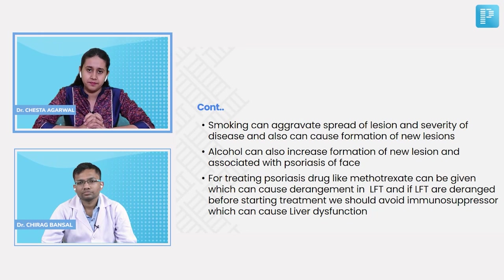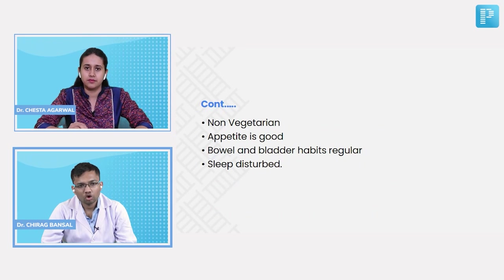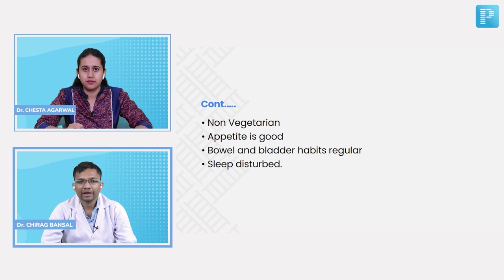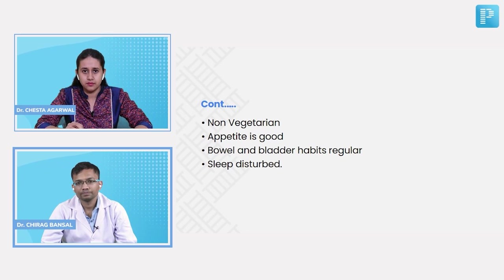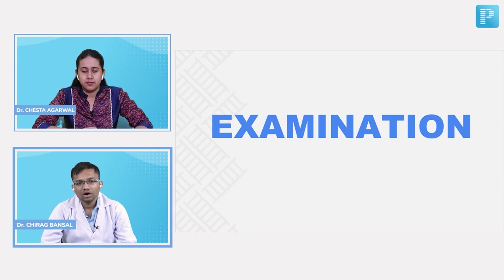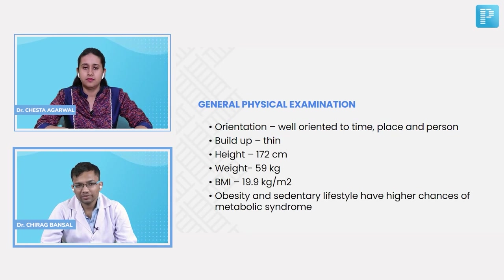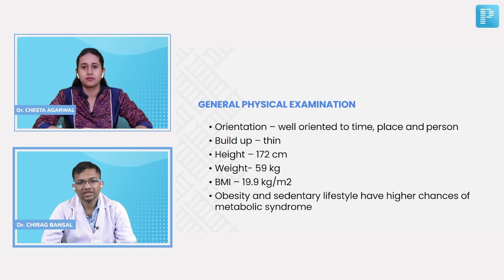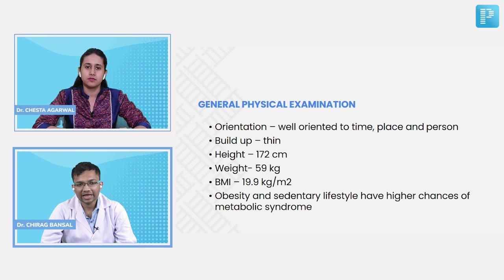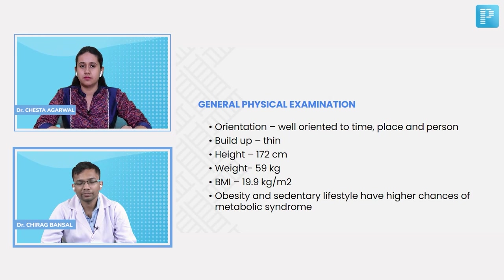The patient is non-vegetarian, with good appetite, regular bowel and bladder habits, but disturbed sleep. On general physical examination, the patient is well oriented to time, place, and person. He is thin by build, height 172 cm, weight 59 kg, and BMI 19.9 kg/m².